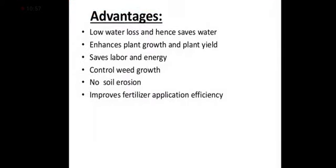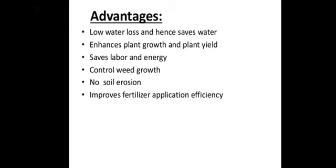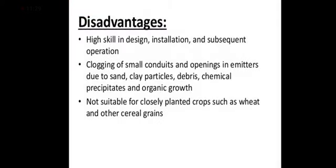The advantages of drip irrigation include low water loss since we give drop by drop to the crop. It enhances plant growth and plant yield, saves labor and energy as it is done mechanically, provides controlled weed growth, no soil erosion, and improved fertilizer application efficiency.